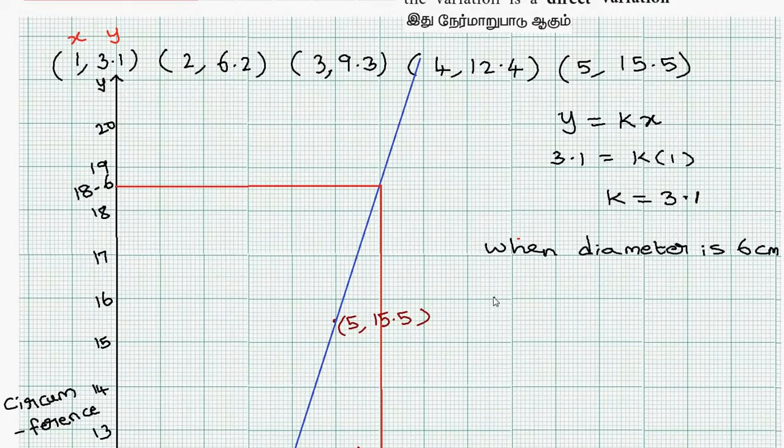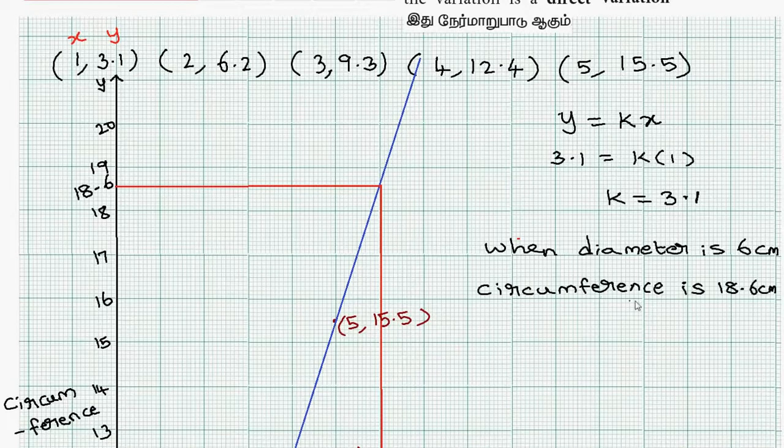So the final answer: when diameter is 6 cm, circumference is 18.6 cm. For verification, use the k value. y equals kx, so 18.6 equals 3.1 times 6. Cross check.